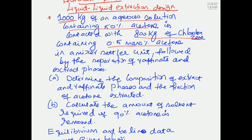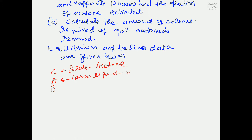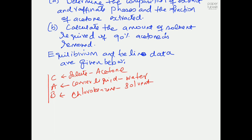Using the CAB notation: C is the solute (acetone), A is the carrier liquid (water), and B is the solvent (chlorobenzene). We are going to perform this experiment in a mixer-settler unit.